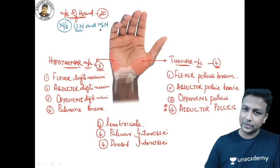Book test: adduction of the thumb is done by Adductor Pollicis. Normally a person holds a book using thumb adduction. If ulnar nerve is injured, Adductor Pollicis is gone. The person tries to hold the book by flexing the thumb instead of adducting — that flexion posture indicates the Adductor Pollicis is non-functional. Book test is for assessing Adductor Pollicis / ulnar nerve.